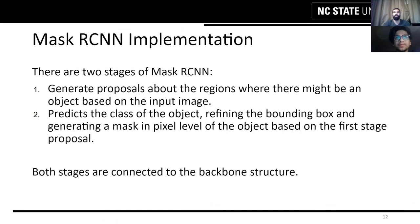Coming to the implementation, there are two stages of Mask RCNN. First, generate proposals about regions where there might be an object based on the input image. Second, predict the class of the object, refine the bounding box, and generate a mask at pixel level for the object suggested in the first stage. Both stages are connected to the backbone structure.